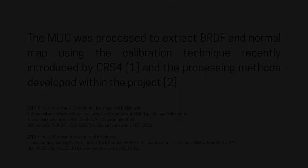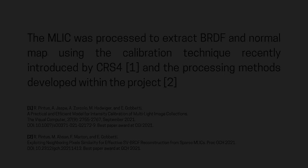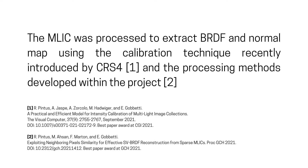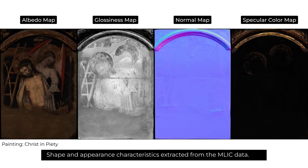The Malik data was processed to extract BRDF and normal maps using the calibration technique recently introduced by CRS4 and the processing methods developed within the project. For further details, please refer to the cited bibliographic sources publicly available on the Evocation website. These are the per-pixel normal and Ward BRDF component maps extracted from the Malik data for both the painting of Christ in Piety and the painting of Prophet Daniel.